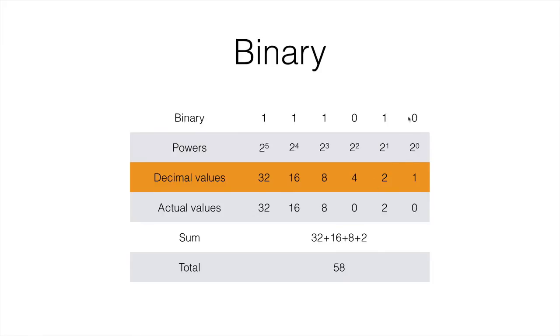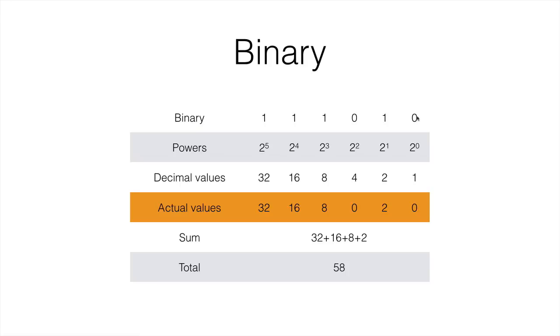If the number is 0, we just ignore it. If the number is 1, we calculate the value and we put it down here. So this is the second number from the right. The value is 2 and because it is a 1, it's actually 2 here. The first one is a 0, so we just ignore it.